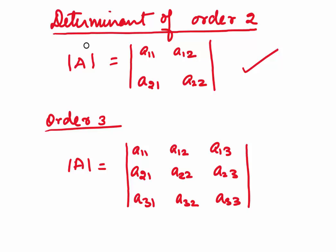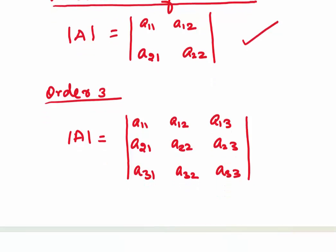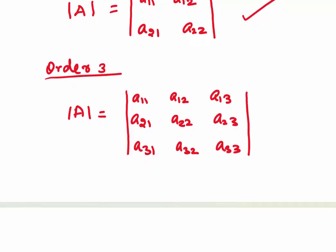A determinant of order 3 will have a form where there are three rows and three columns with elements A11, A12, A13, A21, A22, A23, A31, A32, A33. And in the same way, determinants of higher order can also be written.